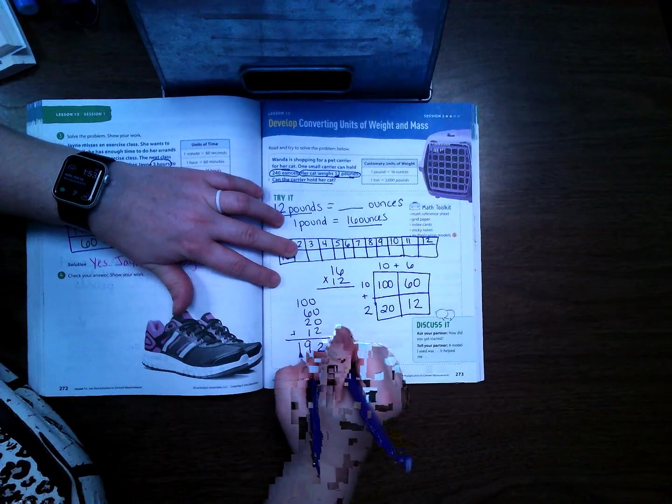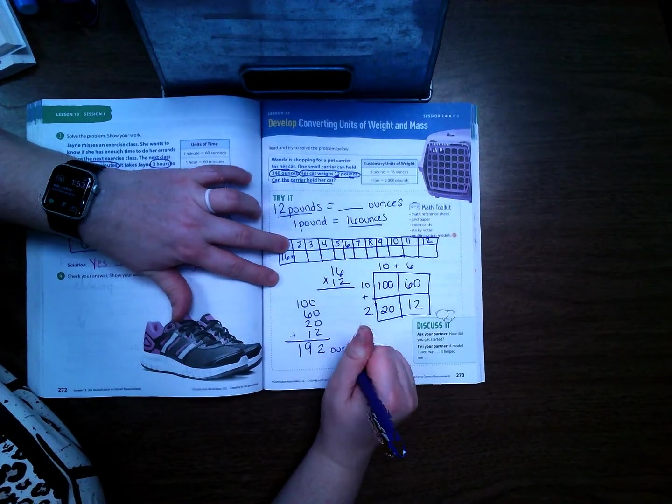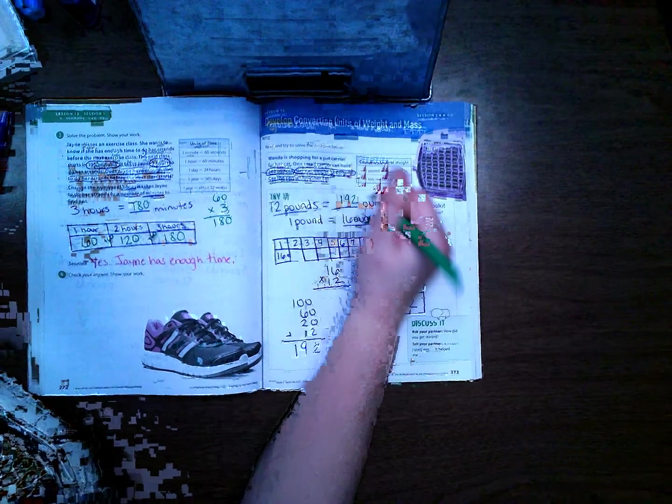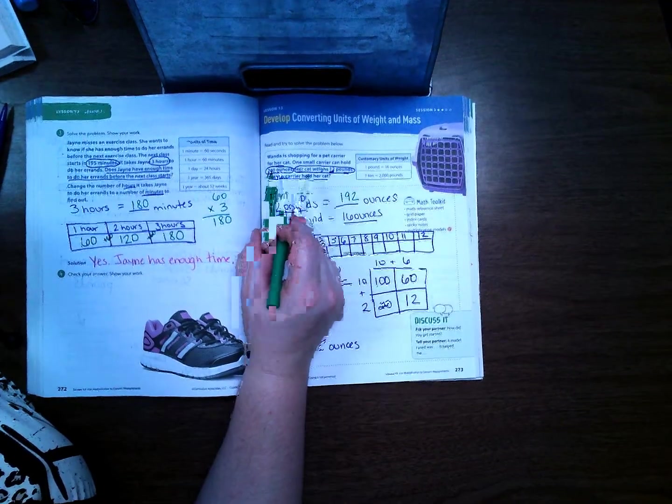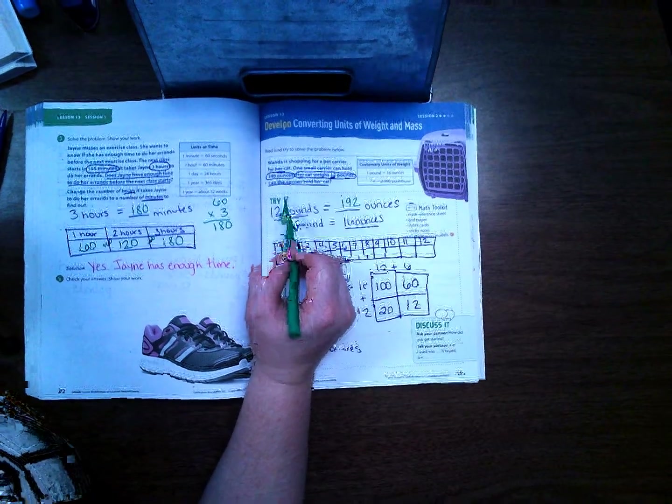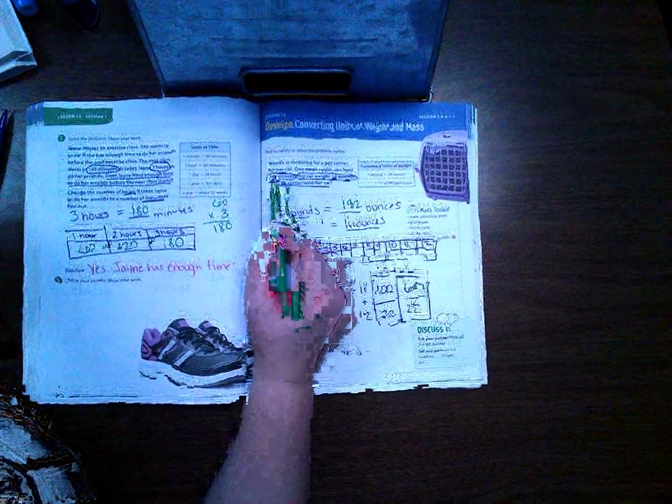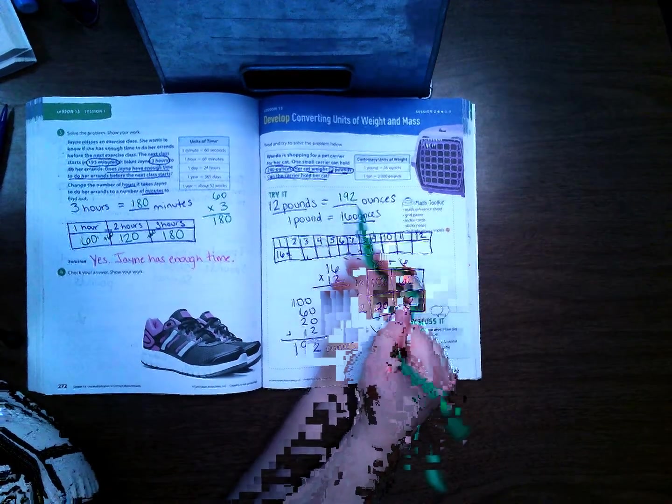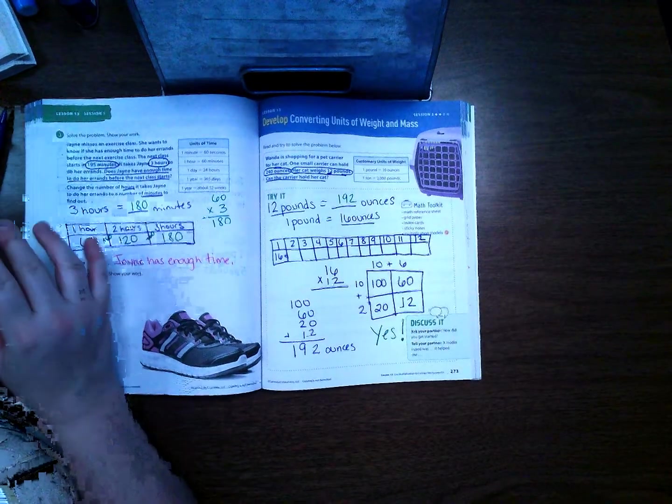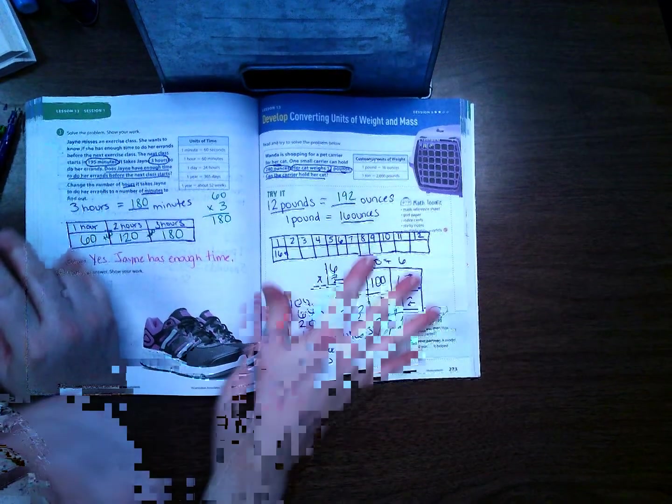I get 192 ounces. So 12 pounds is the same thing as 192 ounces. Will a carrier that holds 240 ounces hold her cat that weighs 12 pounds? Well 240 is bigger than 192, so the answer is yes, it will hold her cat.